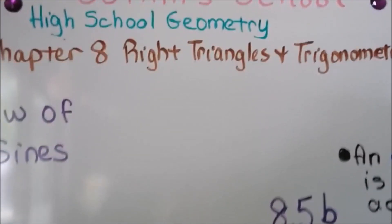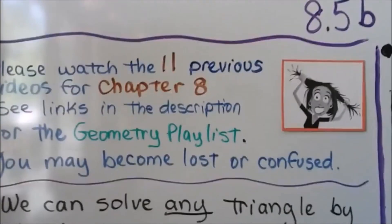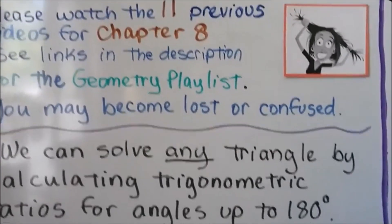Law of Sines, we're at 8.5b, which means there's an 8.5a. If you haven't seen it, you might become lost or confused, and you can go to the geometry playlist in the description.